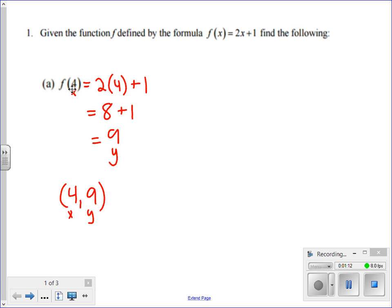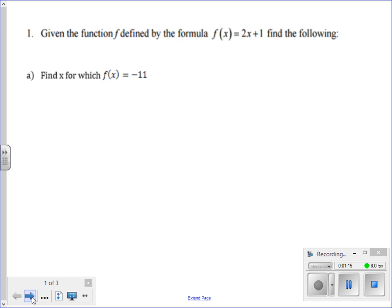So that's 1A. Now we're actually going to go to the second 1A that's in this problem. It was a mistype. Given this same function, f(x) equals 2x plus 1, I need to find x for which f(x) equals negative 11.